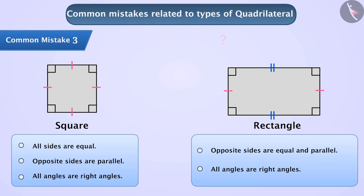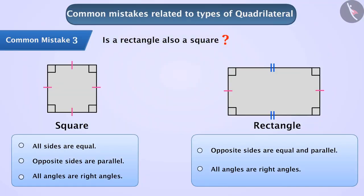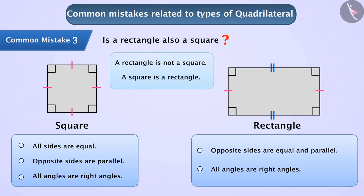Is a rectangle also a square? No, this is not necessary. In a square, it is mandatory that all sides must be equal, but in a rectangle, only opposite sides are equal. Therefore, a rectangle cannot be a square. So remember: a square can be a rectangle, but a rectangle cannot be a square.